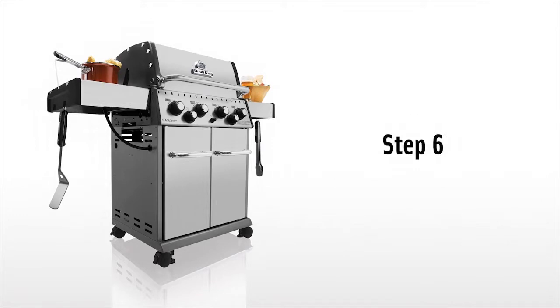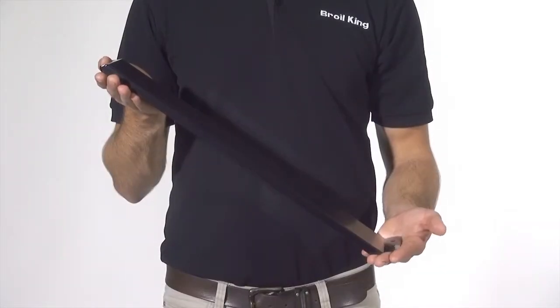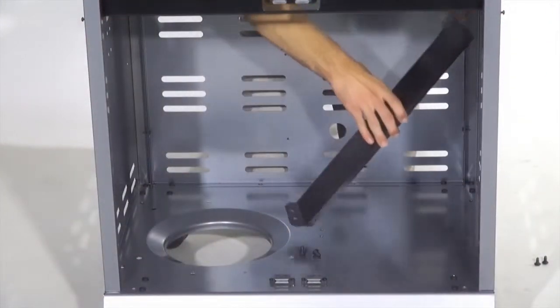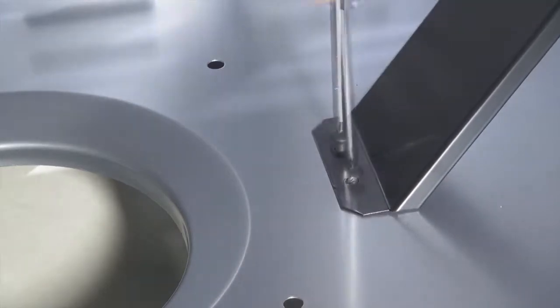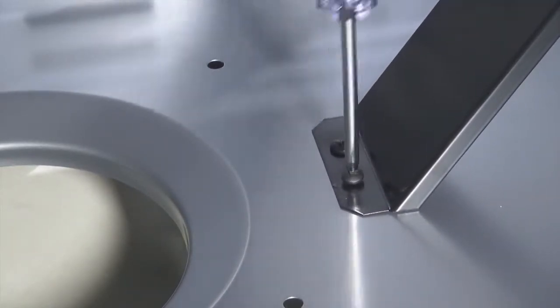Step 6. Install the cabinet brace using the four screws provided. Use two screws on both the base and the side panel.